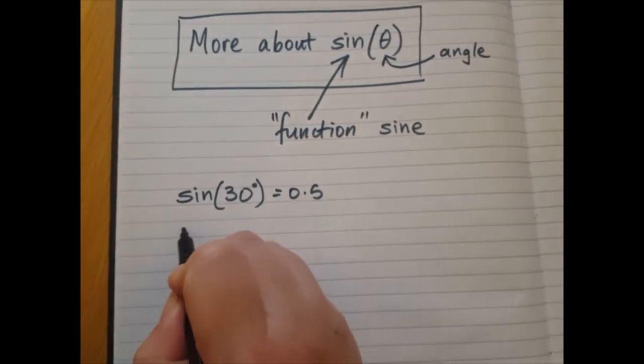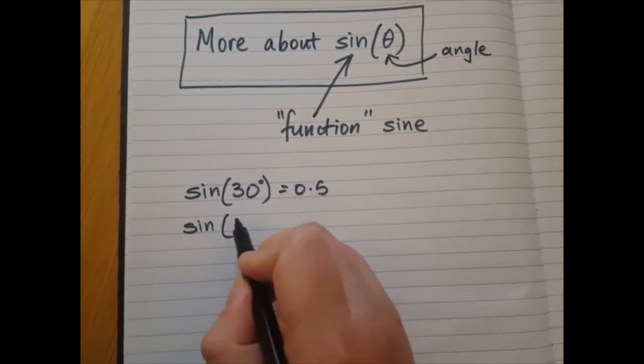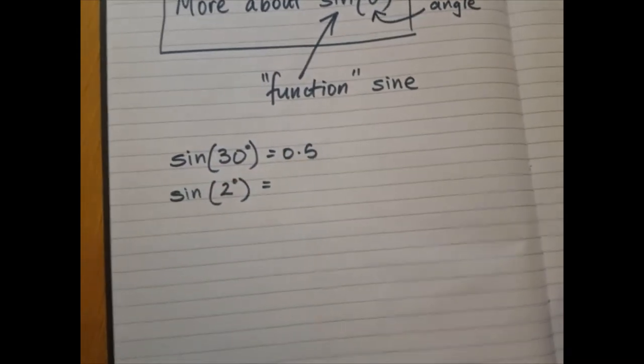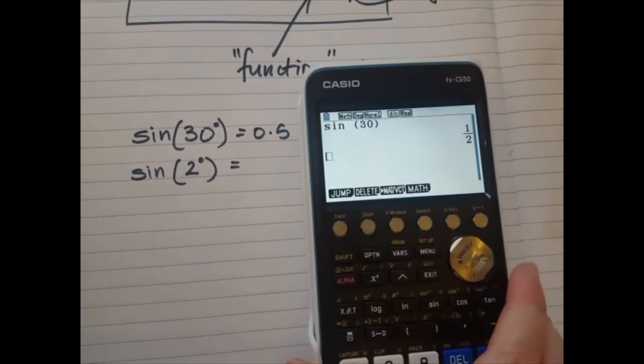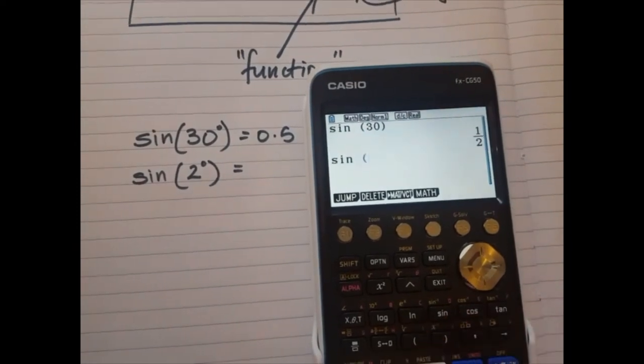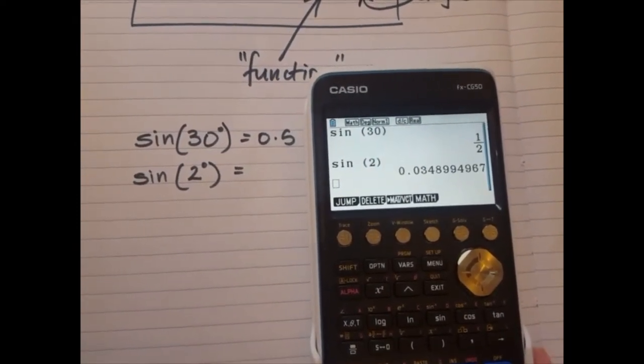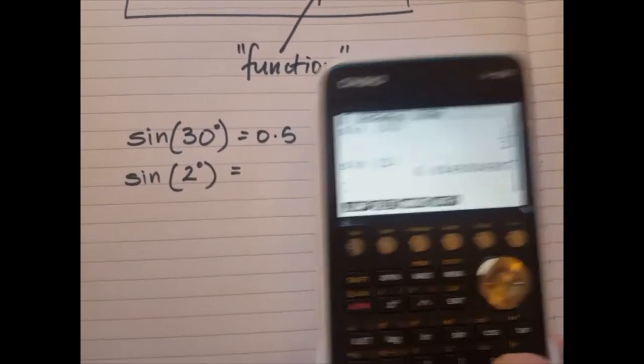What if I had sine 2 degrees? Sine 2 degrees, let's work out what that is. I find my calculator, I press sine 2 degrees and it gives me a decimal answer like this. And then maybe I would write it down.